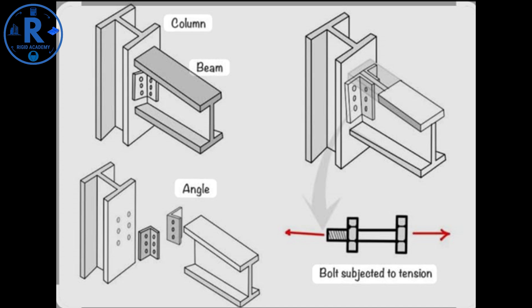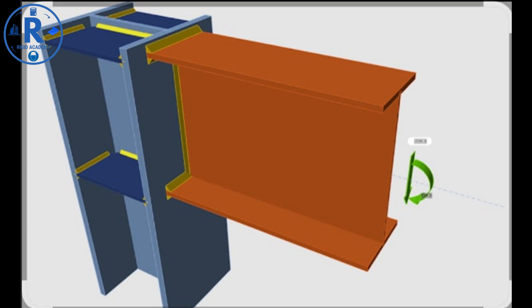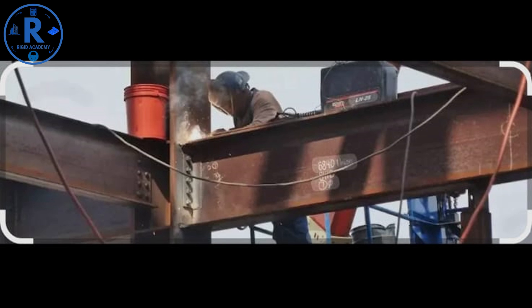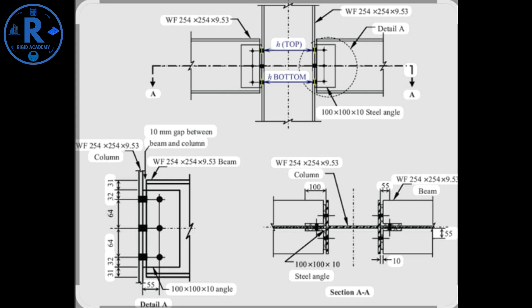Connection design. Connections are critical in steel structures. Types include bolted connections - easier to install on site; welded connections - stronger but require skilled labor; and hybrid connections - combination of welding and bolting. For example, purlin-to-truss connections are usually bolted for quick assembly.